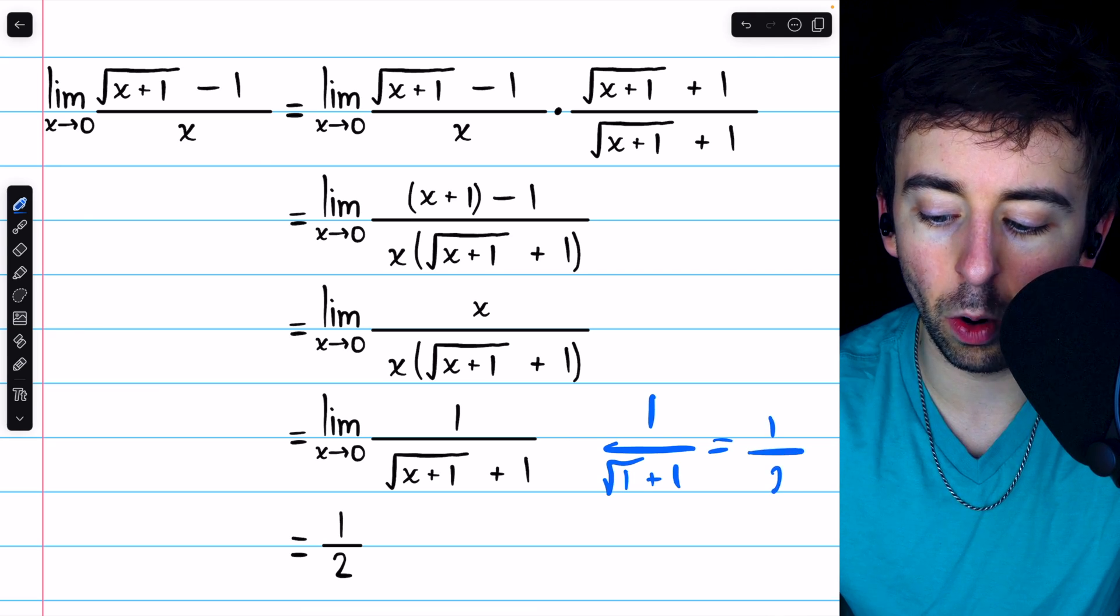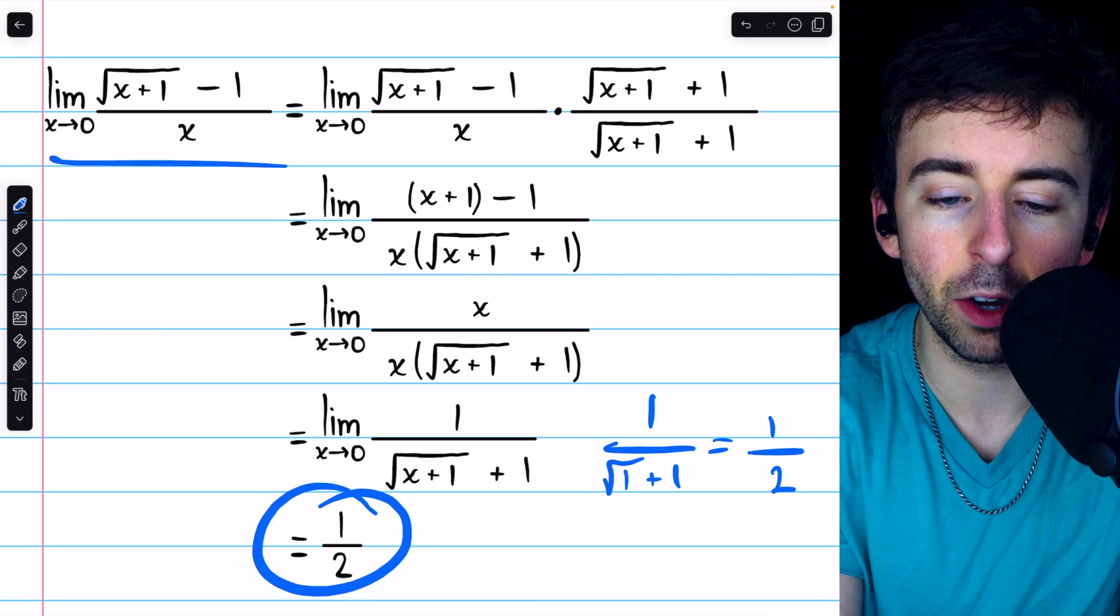which is 1 over 2. And so, that is the value of the original limit.